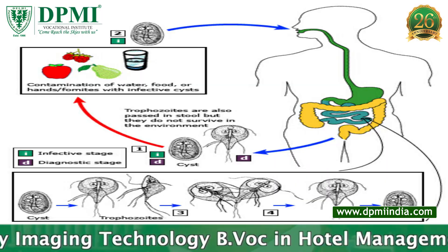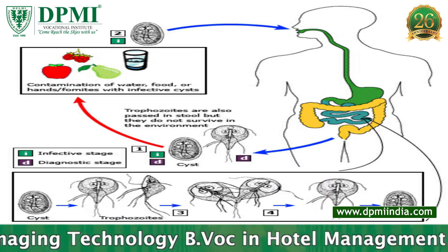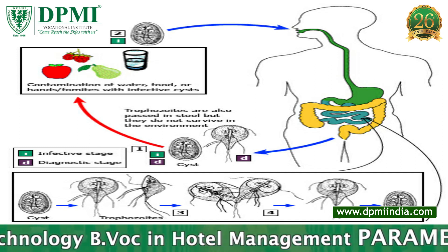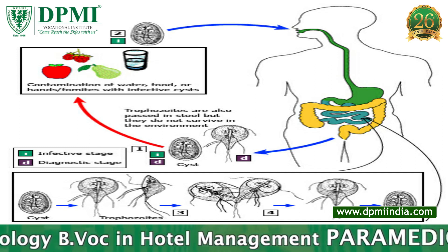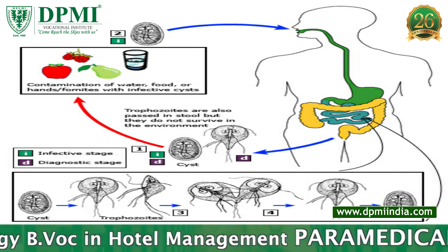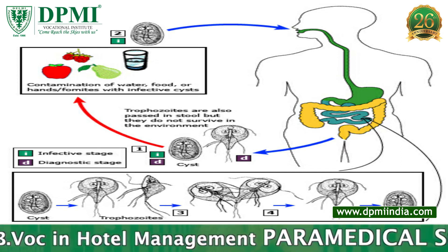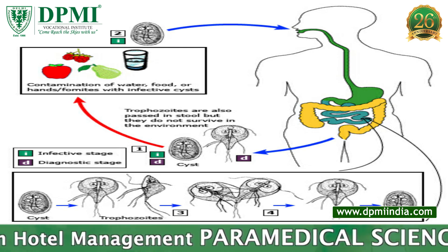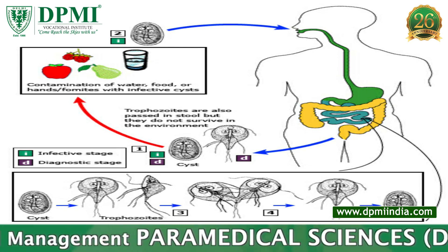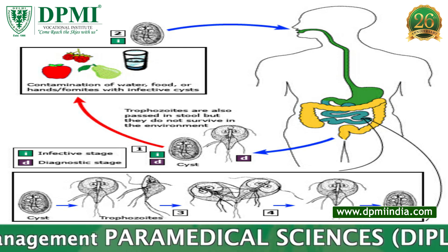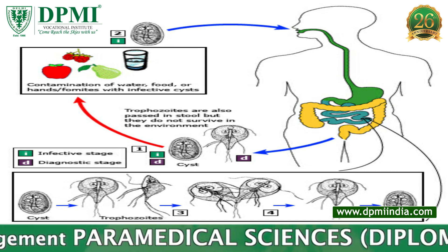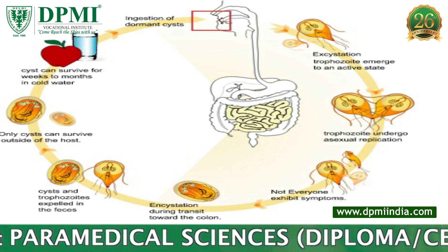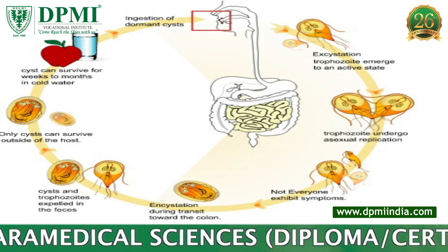Life cycle — it involves four stages. Excystation: release of two trophozoites from each cyst in the duodenum. Multiplication: trophozoites multiply by longitudinal binary fission in the duodenum. Adhesion: trophozoites adhere to the duodenal mucosa.